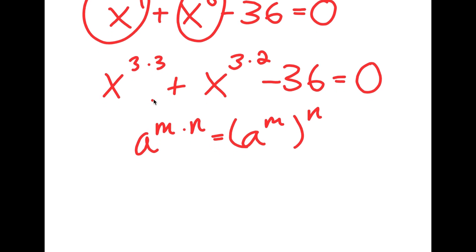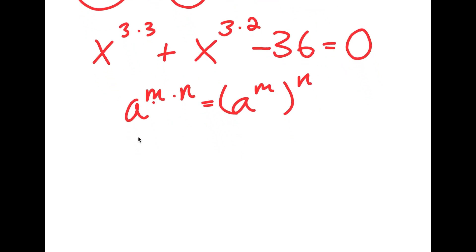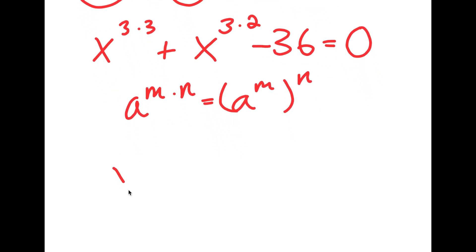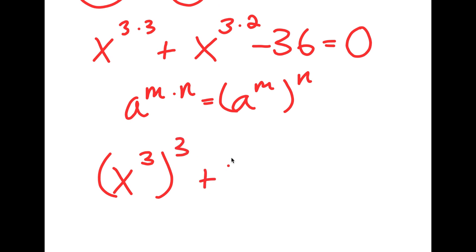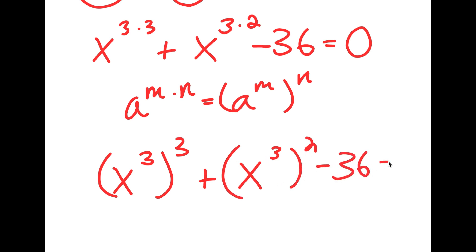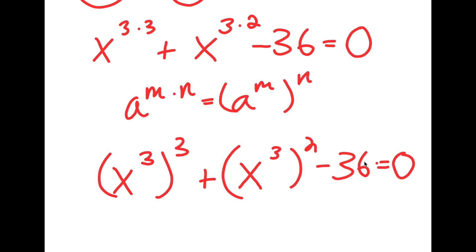So x to the power of 3 times 3 is the same thing as x to the power of 3 to the power of 3, plus x to the power of 3 times 2, which is the same thing as x to the power of 3 to the power of 2. And this minus 36 is equal to 0.